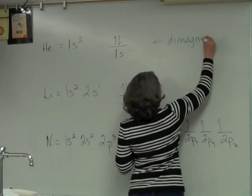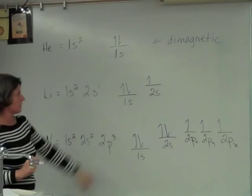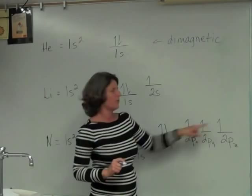Both of these atoms have unpaired electrons: a single unpaired electron, and one, two, three unpaired electrons. So we call these kinds of atoms paramagnetic.